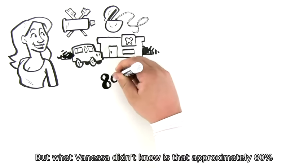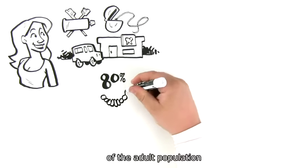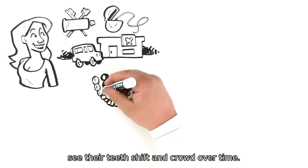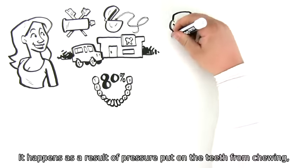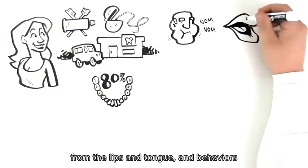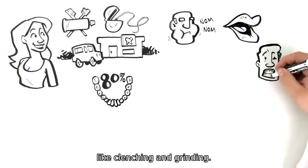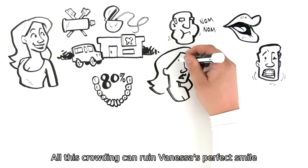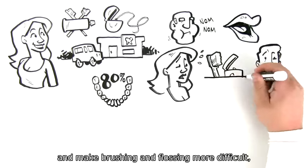But what Vanessa didn't know is that approximately 80% of the adult population see their teeth shift and crowd over time. It happens as a result of pressure put on the teeth from chewing, from the lips and tongue, and behaviors like clenching and grinding.